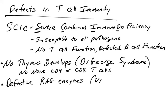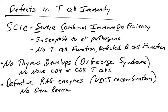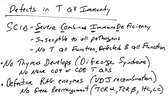Another cause of SCID would be a defective RAG enzyme. The RAG enzymes are involved in VDJ recombination, or somatic recombination, both in gene rearrangement of the T cell receptor proteins and the heavy and light chain receptor proteins. You need the RAG enzymes to perform gene rearrangement in the TCR alpha gene, the TCR beta gene, the heavy chain gene, and the light chain gene. Individuals with defective RAG genes do not perform these gene rearrangements, and therefore lack all B cells and all T cells.